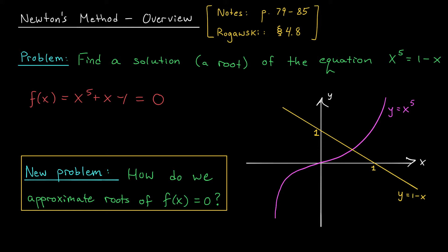Does this mean that there's no root? No, there is a root. After all, look at the graphs. Here's y equals x to the 5. Here's y equals 1 minus x. You can see that there's a point where the graphs intersect. This is going to be the solution to our equation. It lies somewhere between x equals 0 and x equals 1.